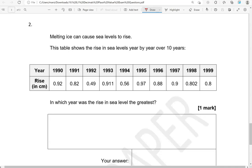In which year was the rise in sea level the greatest? So we're looking for the greatest decimal. We've got 0.92, 0.82, 0.49, 0.911, 0.56, 0.97, 0.88, 0.9, 0.802, 0.8.